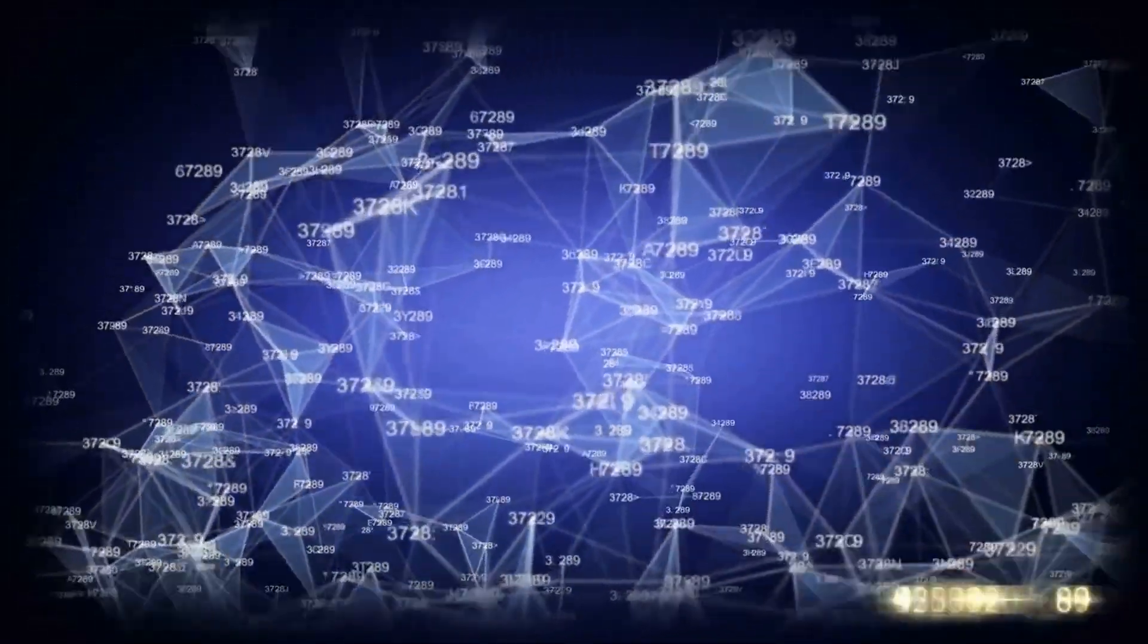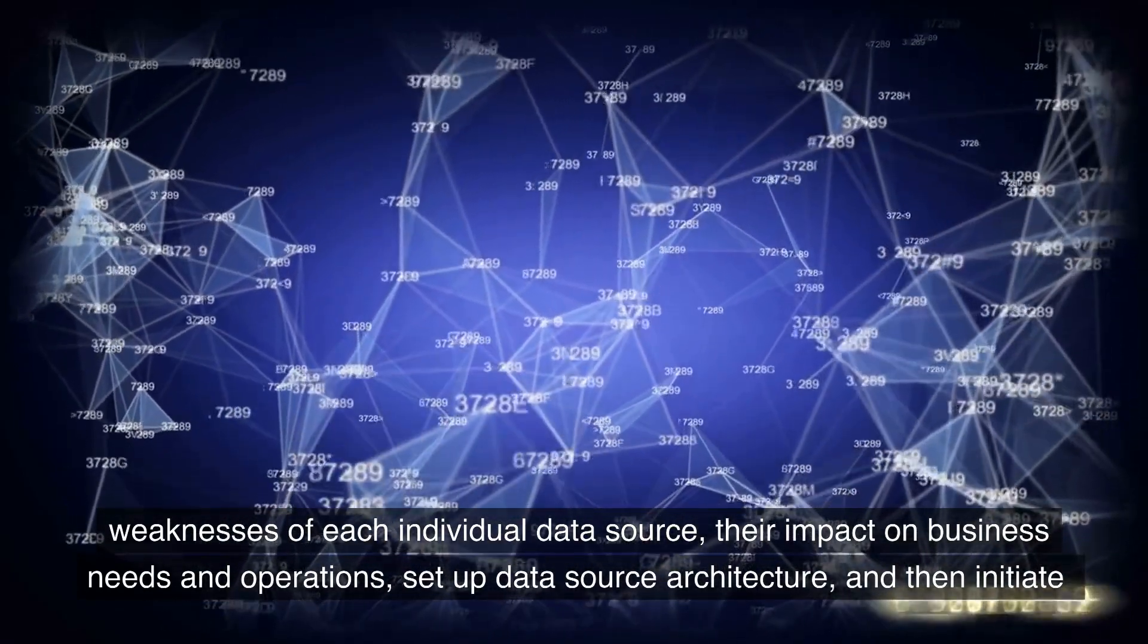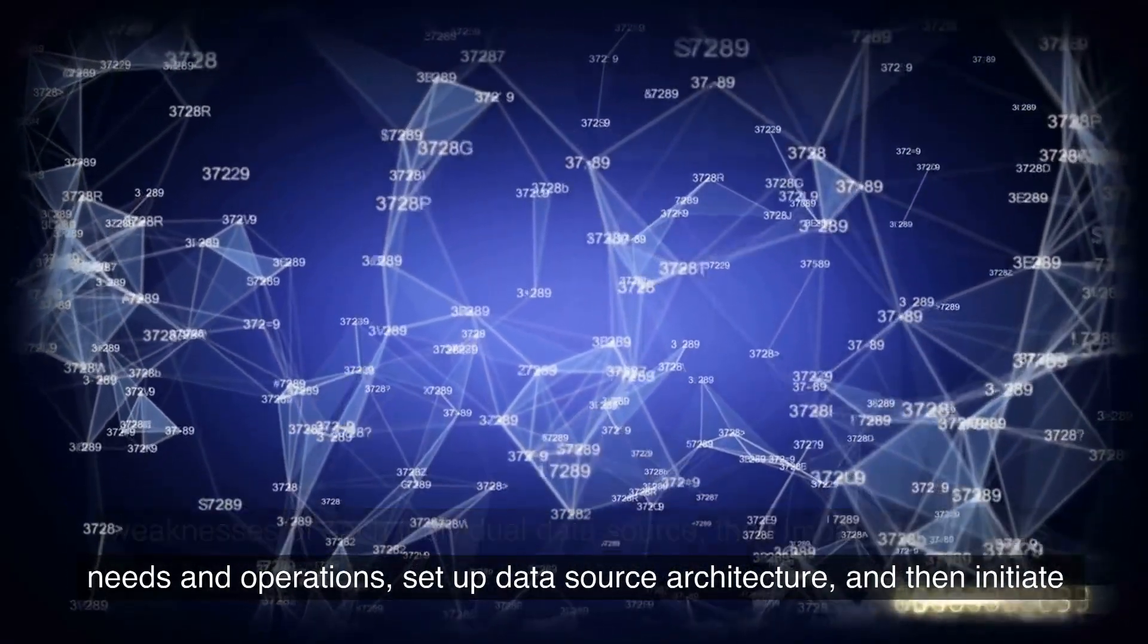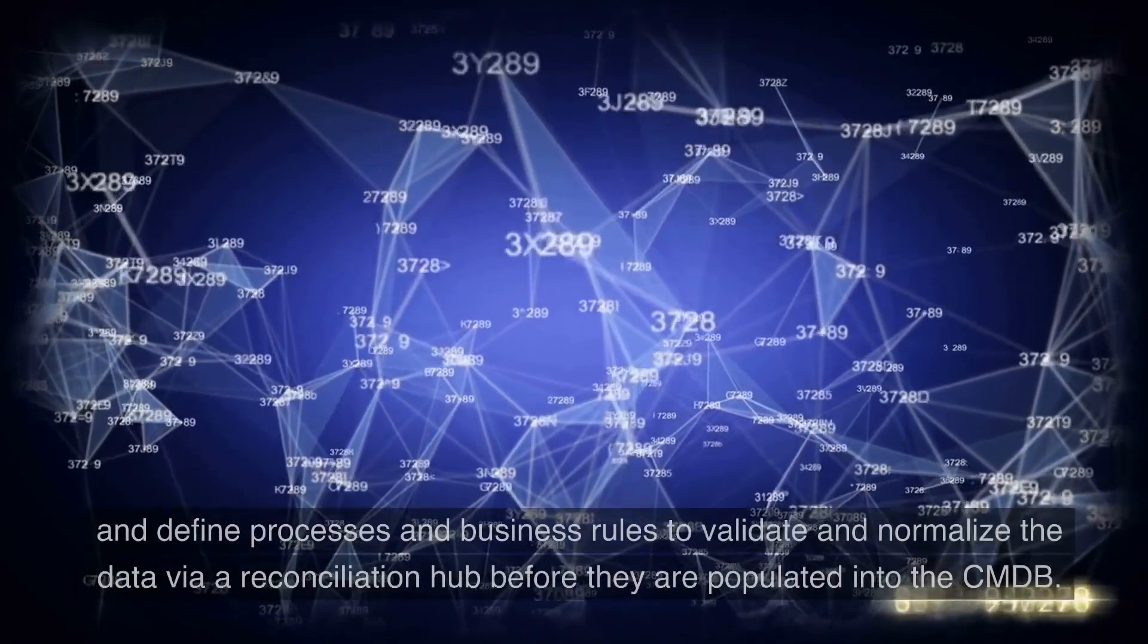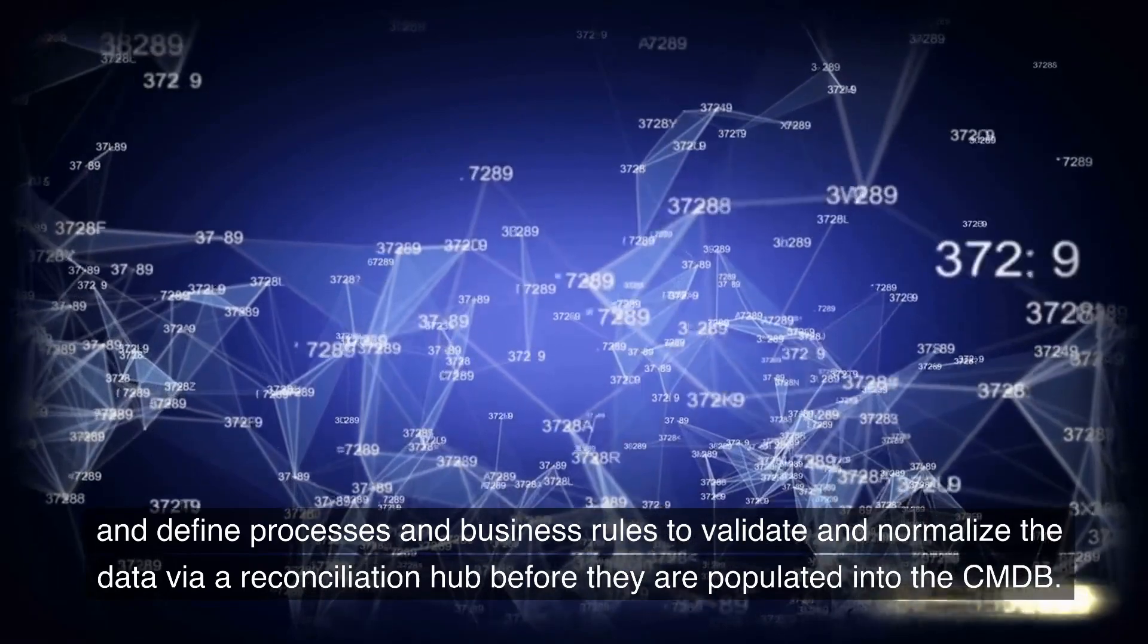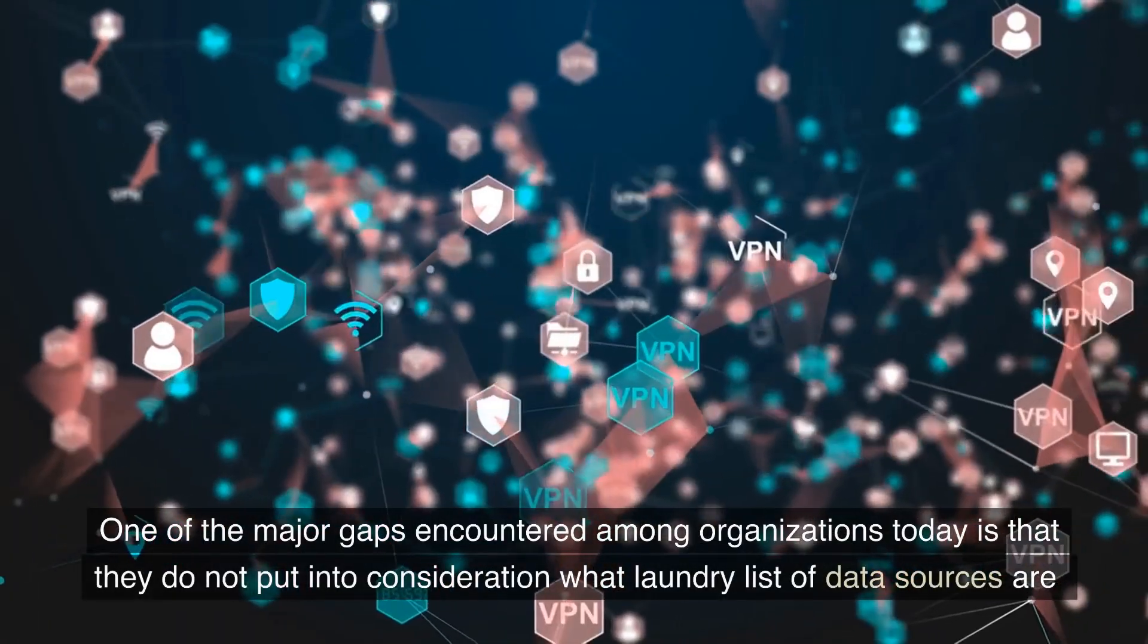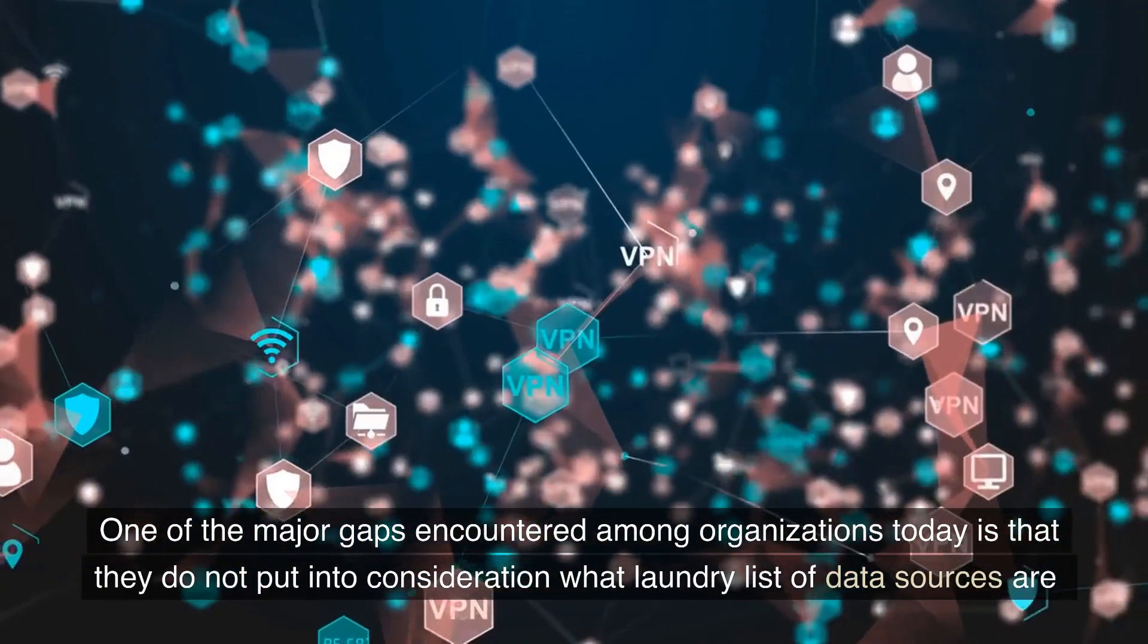While it is critical to ensure that data from different sources need to populate the CMDB, it is crucial to understand the strengths and weaknesses of each individual data source, their impact on business needs and operations, set up data source architecture, and then initiate and define processes and business rules to validate and normalize the data via a reconciliation hub before they are populated into the CMDB.